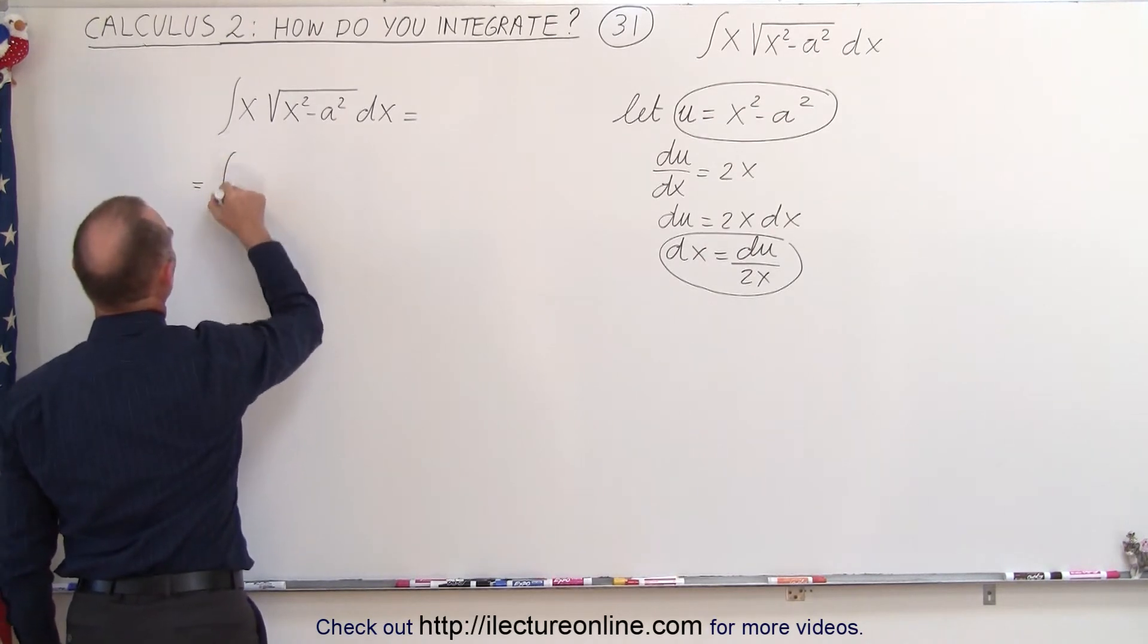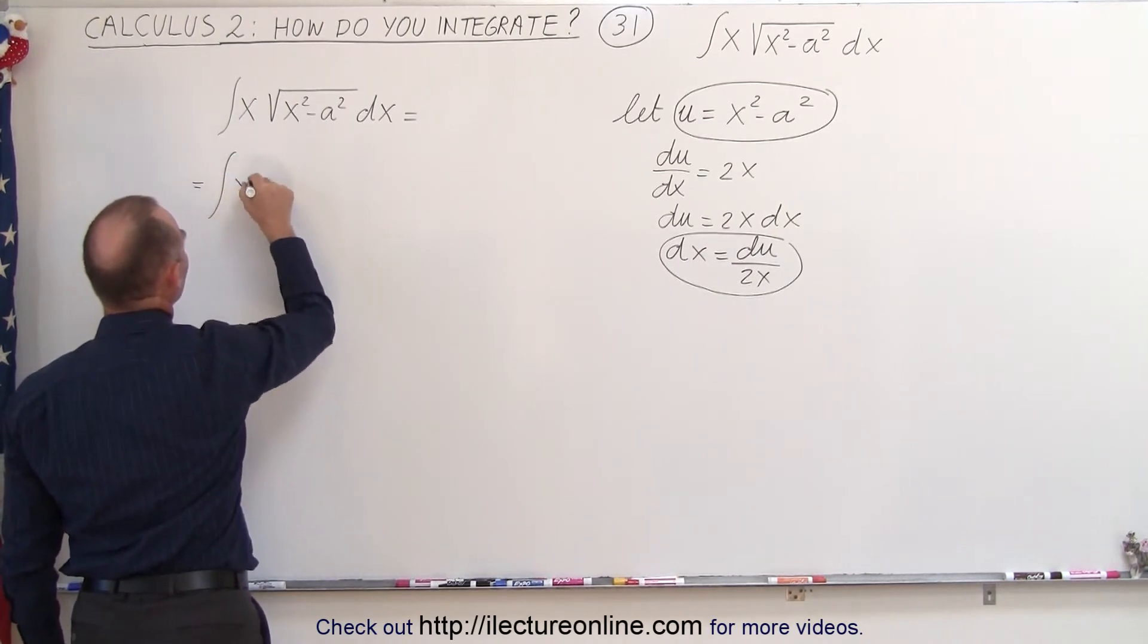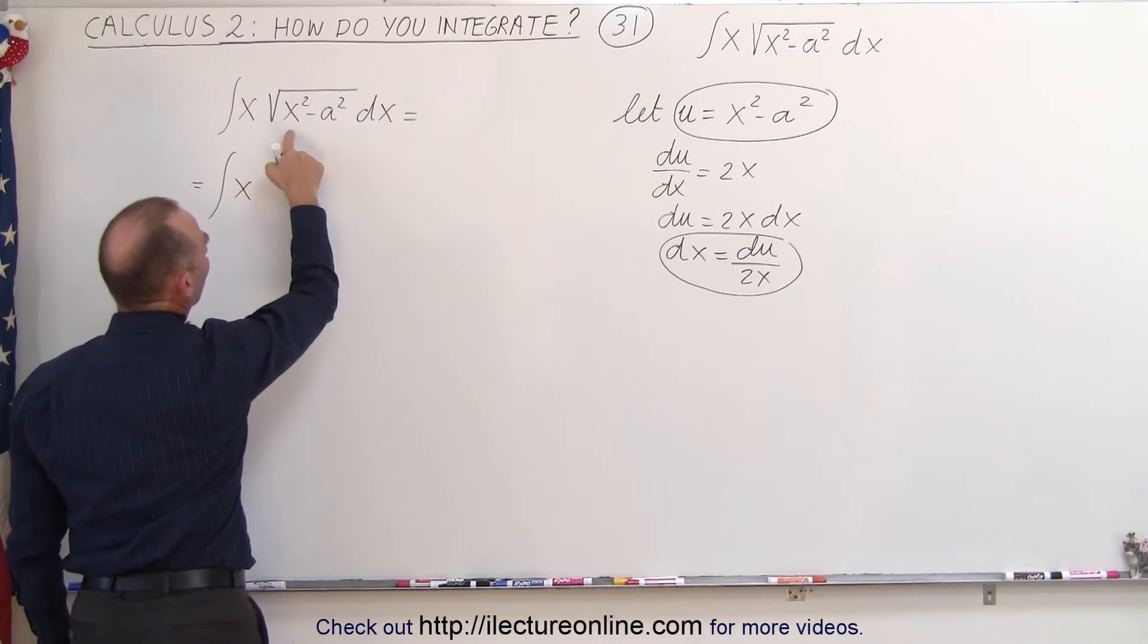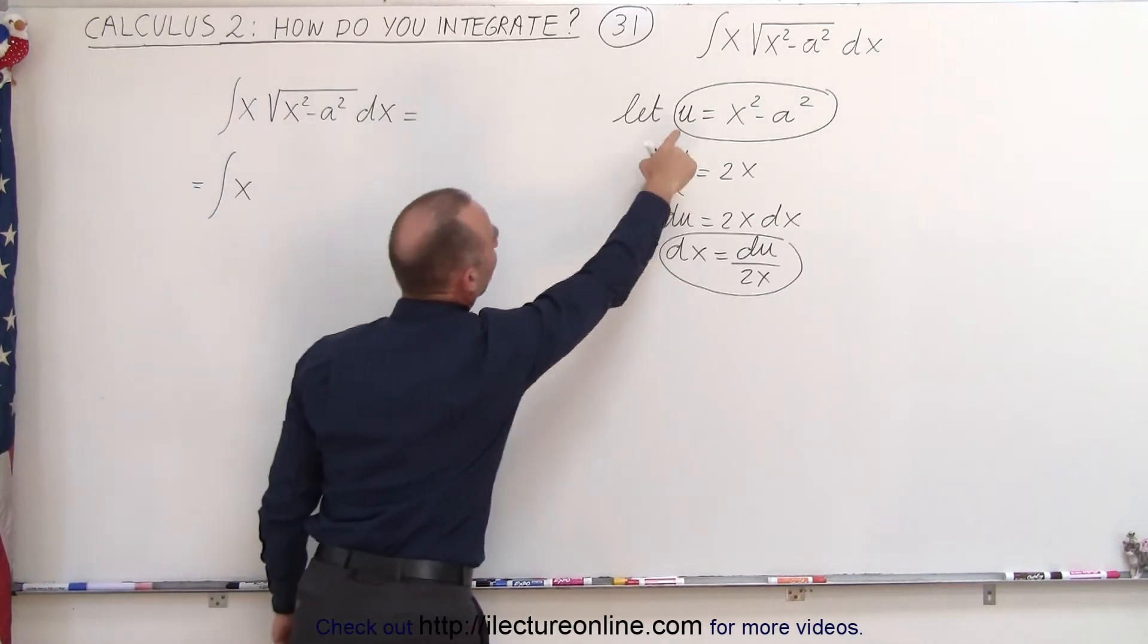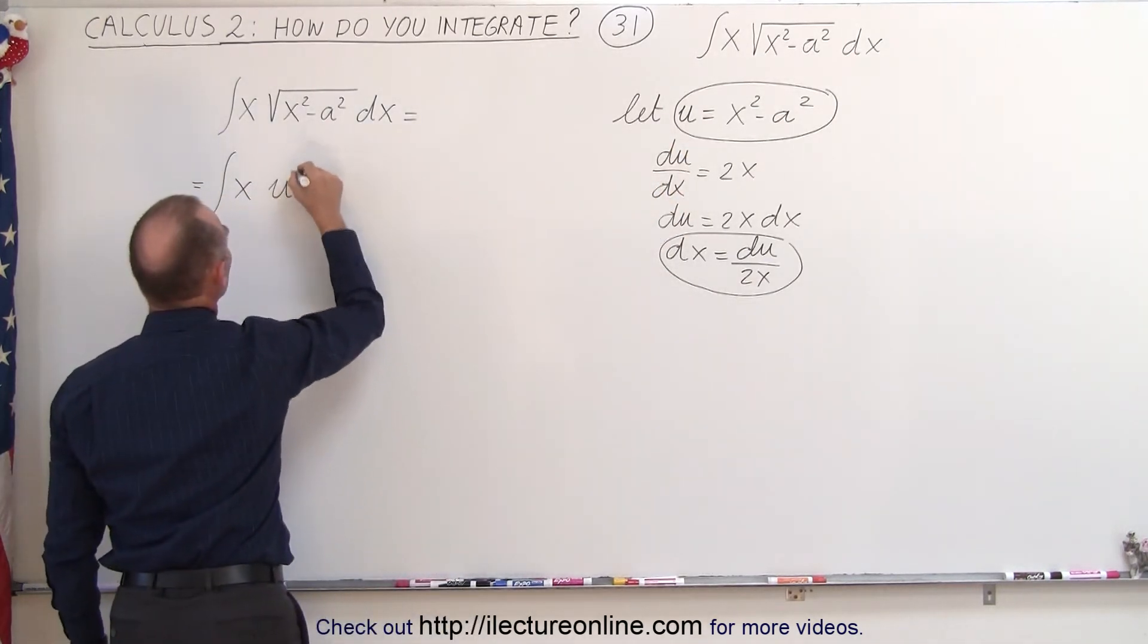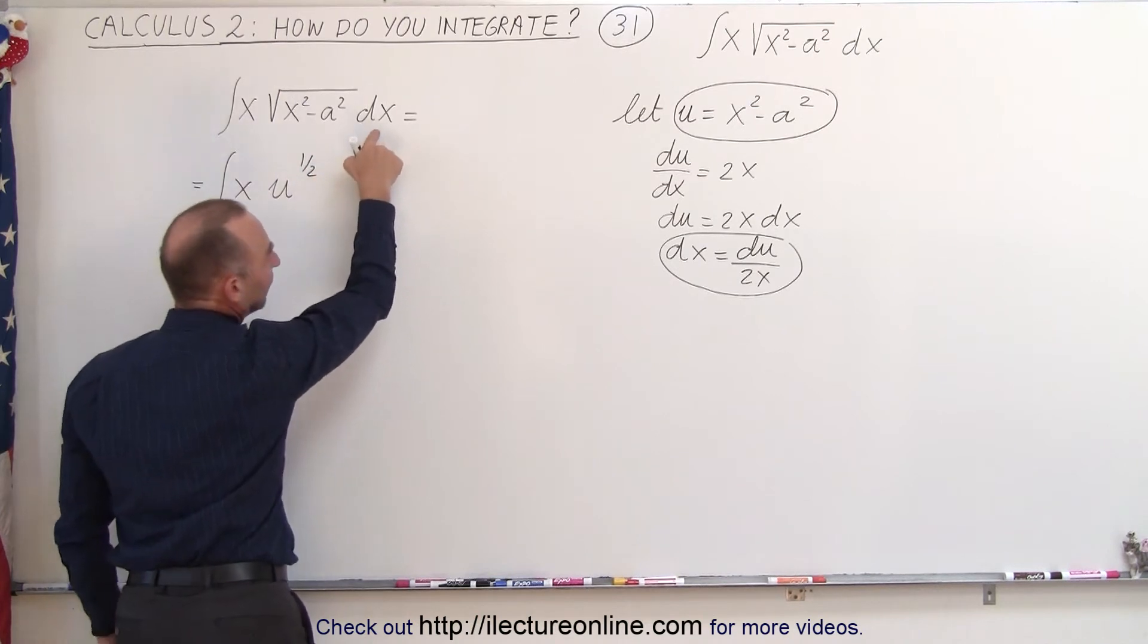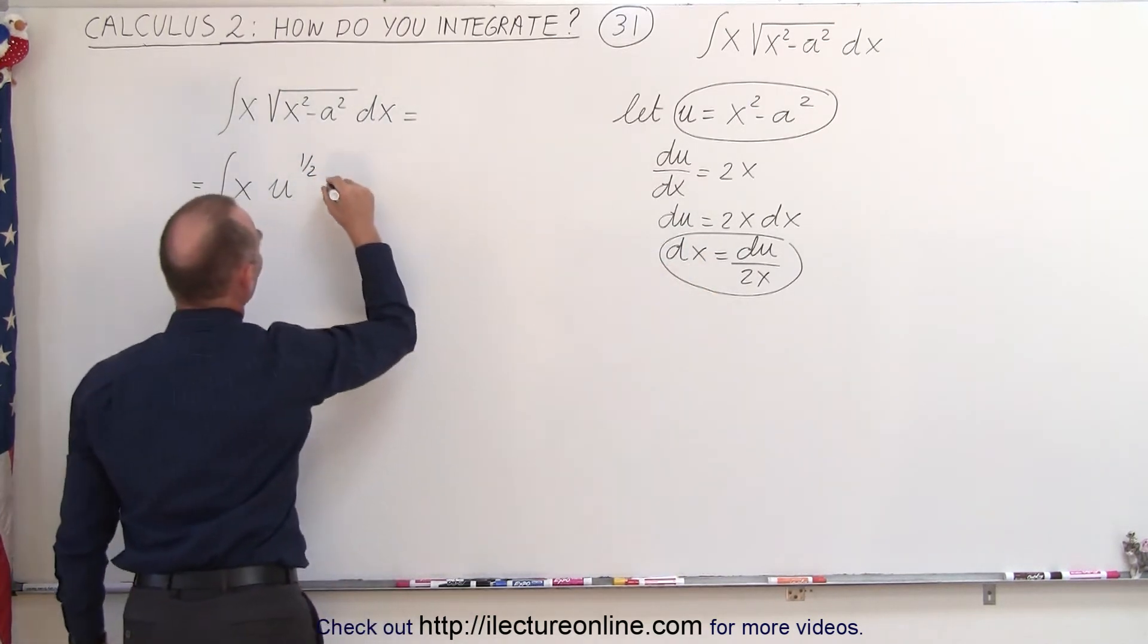So this is equal to the integral of, we leave the x there, we're going to have the square root of x squared minus a squared, which is u, so we end up with u to the 1 half power, and dx becomes du divided by 2x.